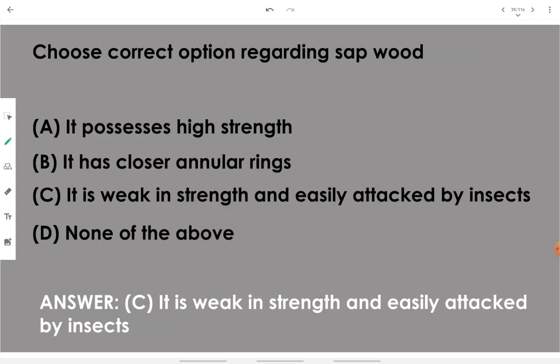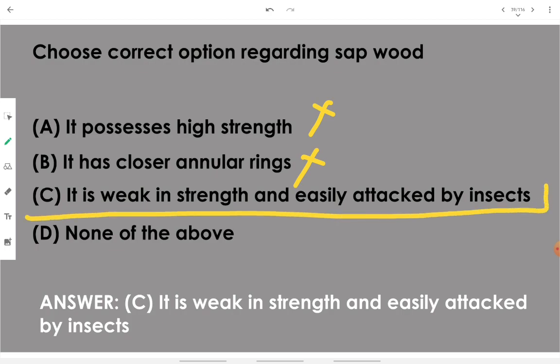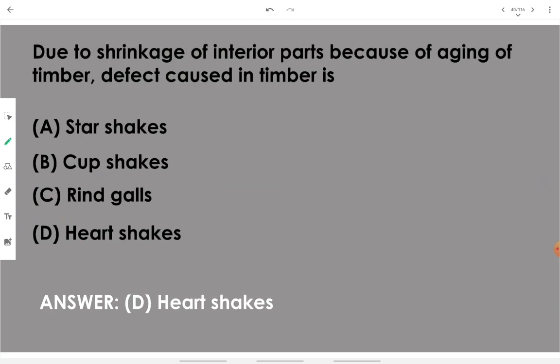Regarding sapwood: it does not possess high strength, and it has nothing to do with closer or further annular rings. Sapwood is weak in strength and easily attacked by insects — the fresh wood which has much moisture and is unseasoned is weak in strength and can be easily attacked by insects.